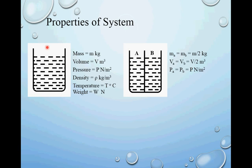Pressure of part A and part B remains unchanged. The container is open to atmosphere and atmospheric pressure acts on the water surface. Even after inserting the partition, both part A and part B remain open to atmosphere, so atmospheric pressure still acts on the water surface of both parts — pressure remains unchanged. For density, since mass and volume both change by the same amount, their ratio remains constant. So density of part A and part B equals the density of the original container.